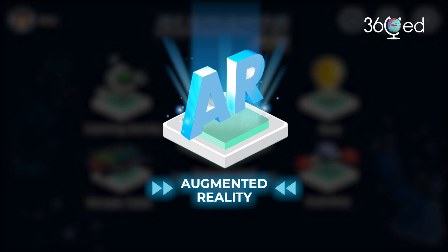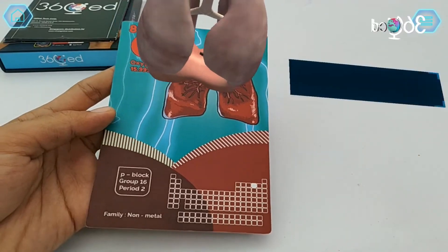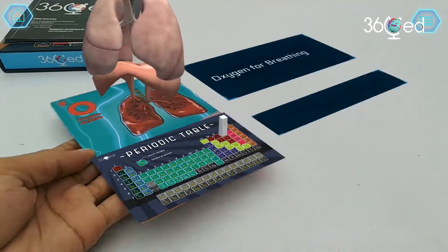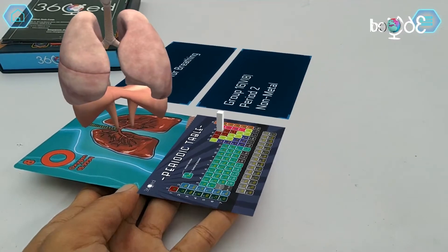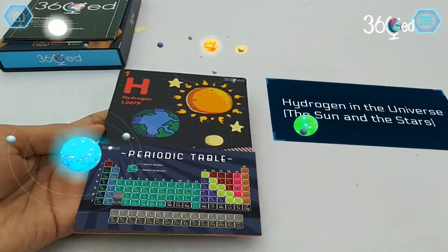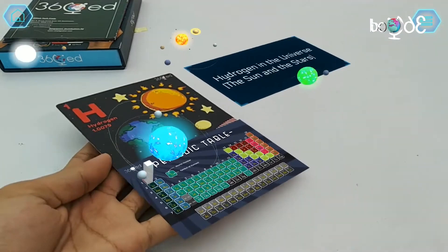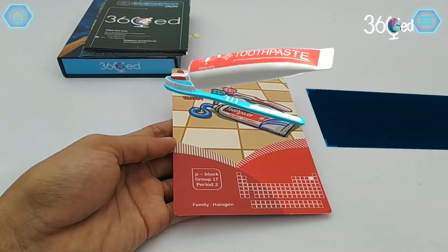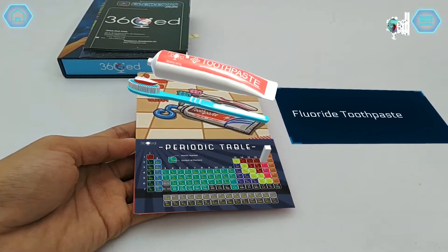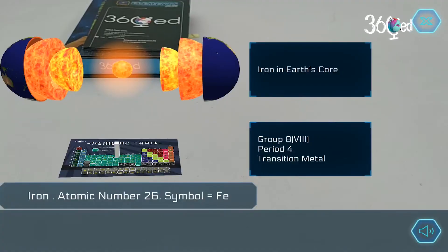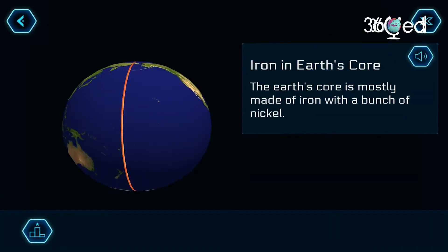This is the augmented reality section. Here you can learn the details of the first 30 elements on the periodic table by pointing the camera at a flashcard from the package. When you scan the front side of the flashcard, you will see at the top 4D models showing the common usage or occurrence of that element in nature. The lower half shows where on the periodic table the element you are looking at is located. You can tap either part to learn more details.